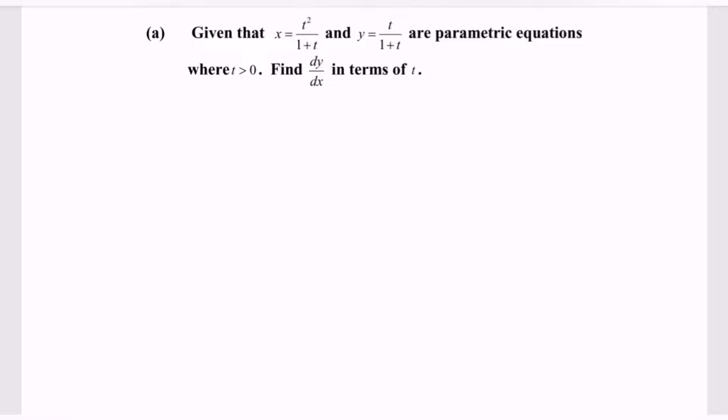Before we start, kindly state the quotient rule: y prime equals v multiplied with u prime minus u times v prime, all over v squared.